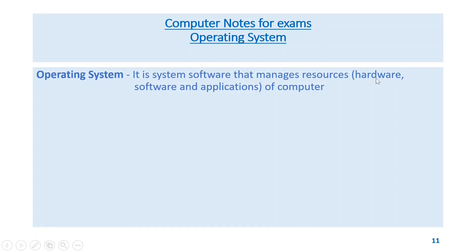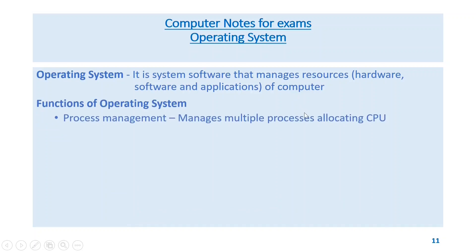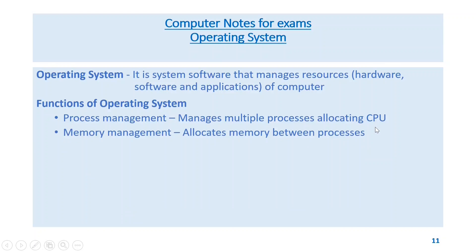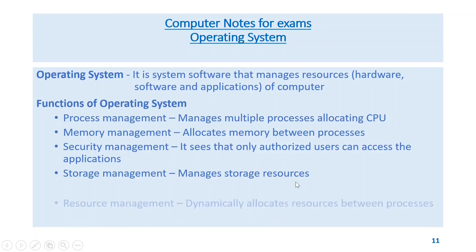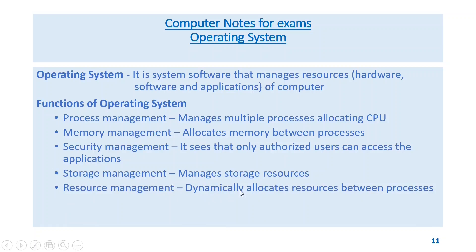Operating system is system software that manages resources — hardware, software, or applications — of the computer. Functions of the operating system: process management manages multiple processes, allocating CPU. Memory management allocates memory between processes.